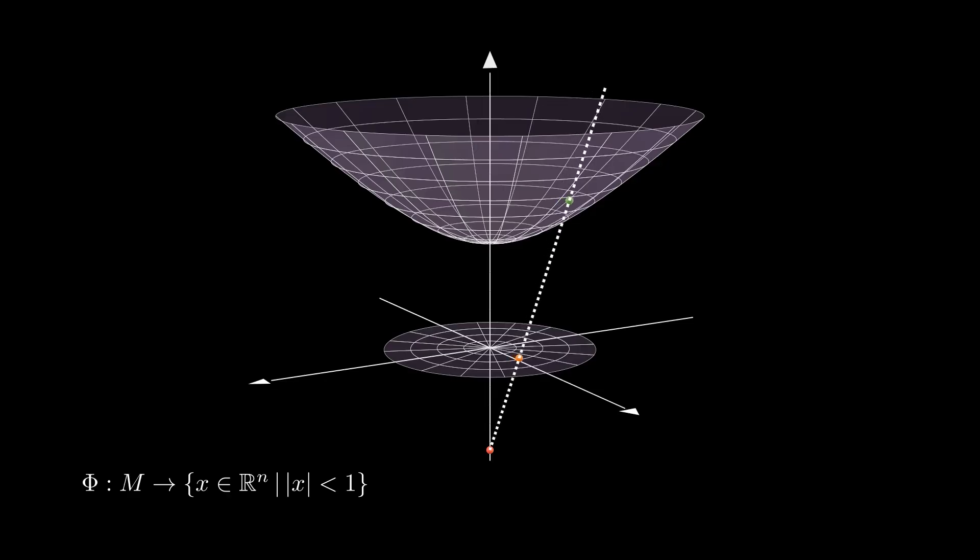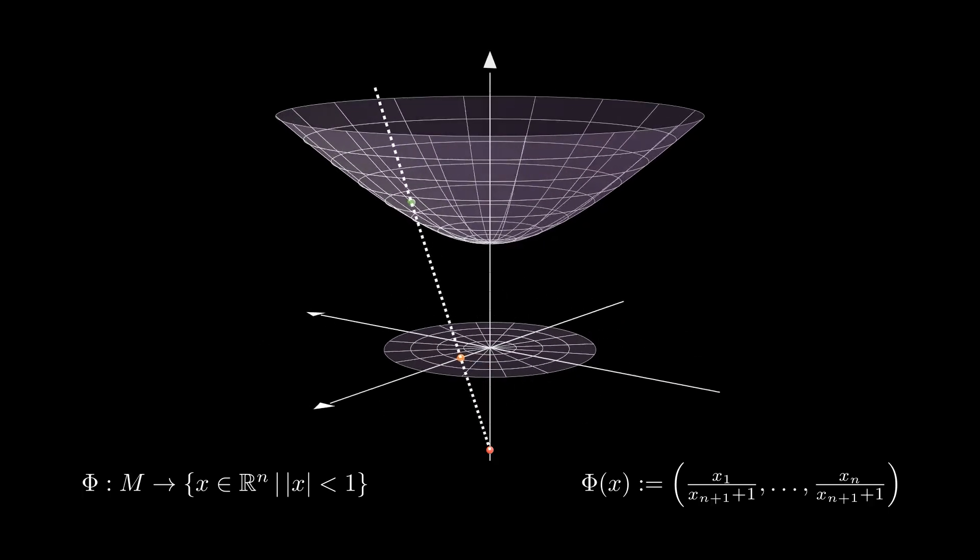(0,0,...,0,-1), and then define Phi to be the point where this line intersects R^n. You can check that it has this formula and it is indeed an isometry. The computations are not more difficult than the ones earlier in this video.